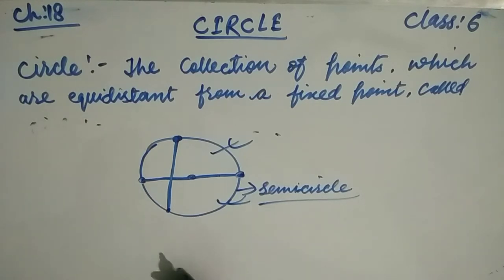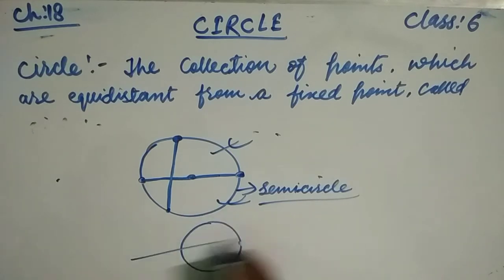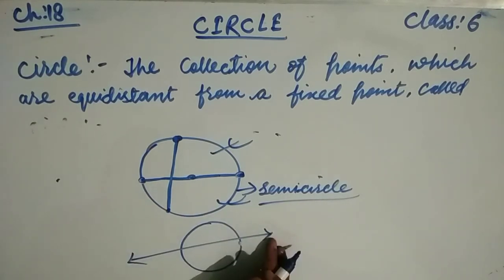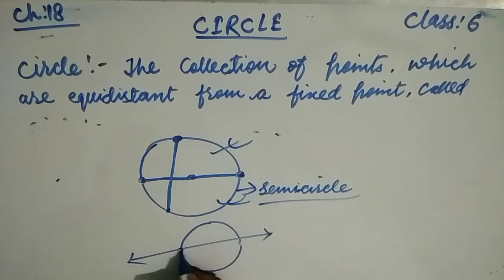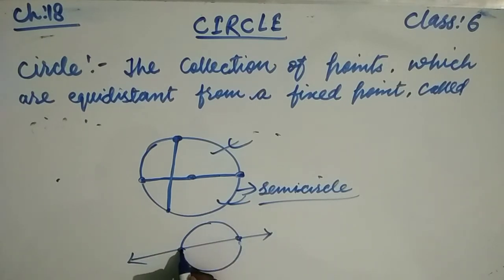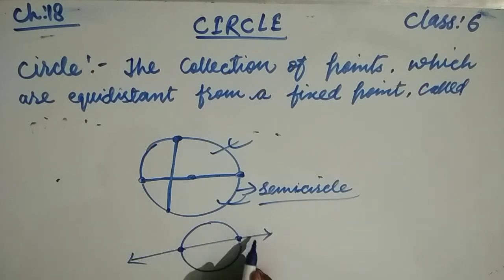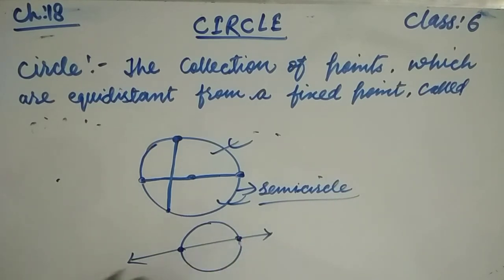The secant of a circle is a line which intersects the circle at two distinct points. A line which intersects the circle into two distinct points is called a secant.